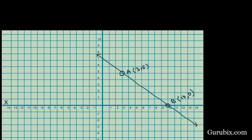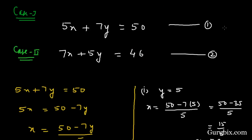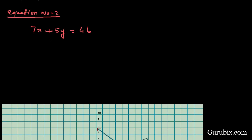Now we start with equation number 2: 7x + 5y = 46. We write the value of y in terms of x. Then 5y = 46 − 7x, which gives y = (46 − 7x) / 5.